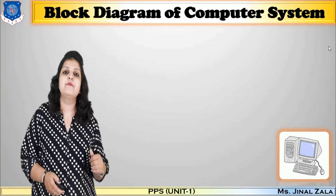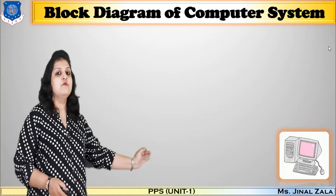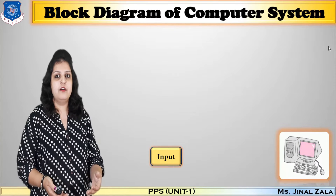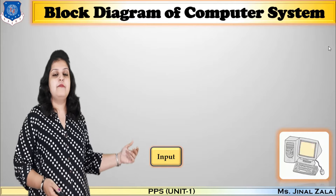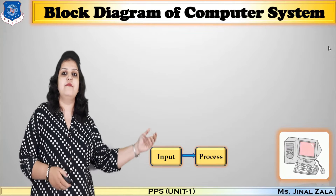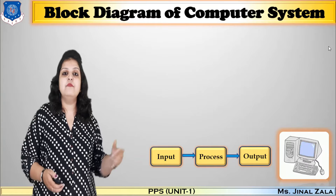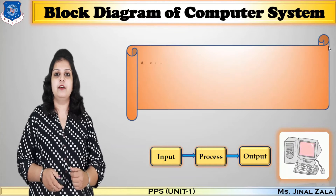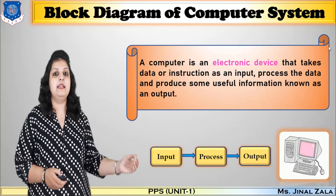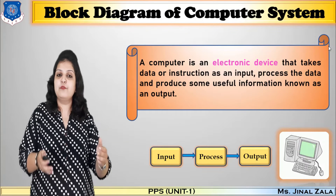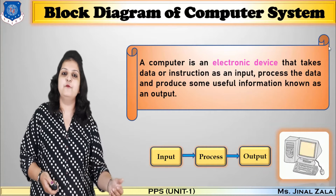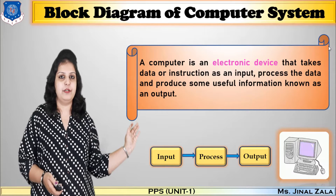What is the function of our computer? Here you can see the keyboard and mouse. By using keyboard and mouse, we can enter some input, instruction, or data. Then after entering input, the computer processes the data and finally we get the output on our display. So the definition of computer is: a computer is an electronic device that takes data and instructions as input, then processes the data and finally produces useful information known as output.